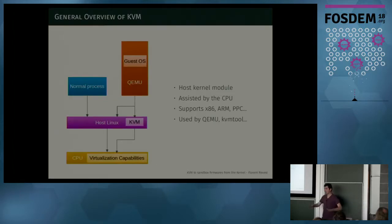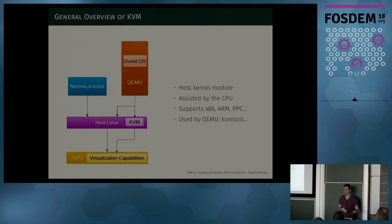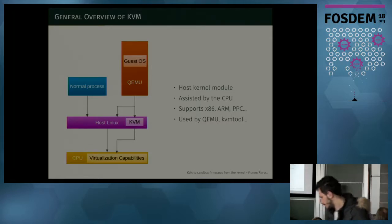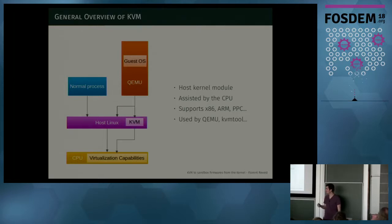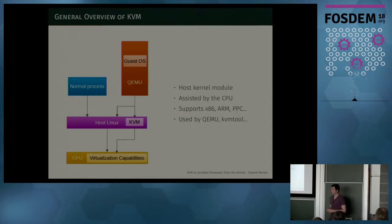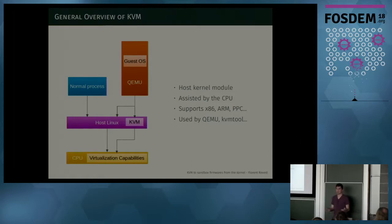KVM is a hypervisor. You may have heard that there exist two kinds of hypervisors: type one, type two — one between the hardware and a kernel, and one that runs between the kernel and the user space tools. KVM is something else. It's a part of the host kernel — a module you could load with a simple insmod KVM.ko. Its role is to provide an API to user space programs so they can access the virtualization capabilities of the hardware. Some CPUs have extensions like Intel's VTX, AMD's AMDV, and ARM's virtualization extensions.